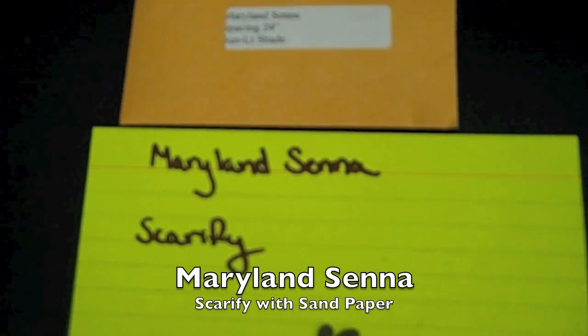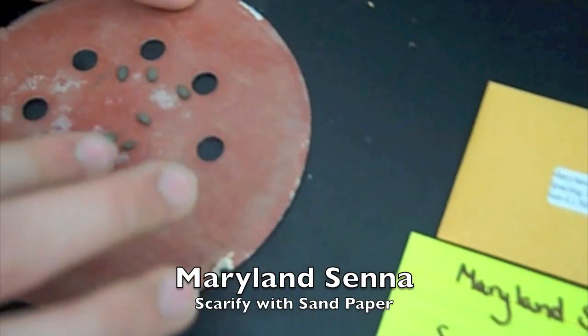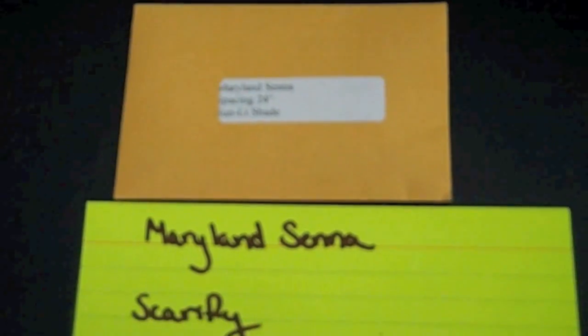Okay, so here's our video on how you need to prepare your Maryland Senna seed to be able to be planted in the ground and grow into a full plant. You'll find your seeds in the little orange packet as shown, labeled Maryland Senna. And what you'll want to do is take out the seeds, and what needs to be done is they need to be scarified.